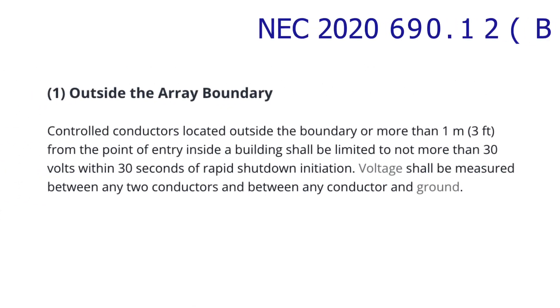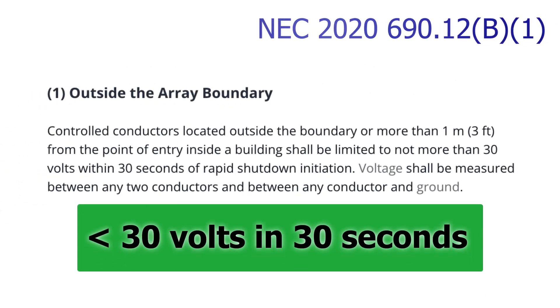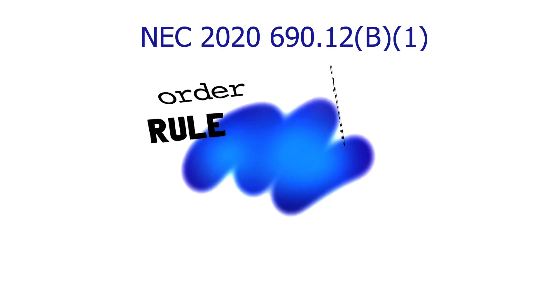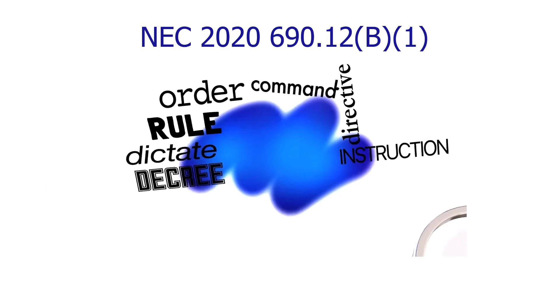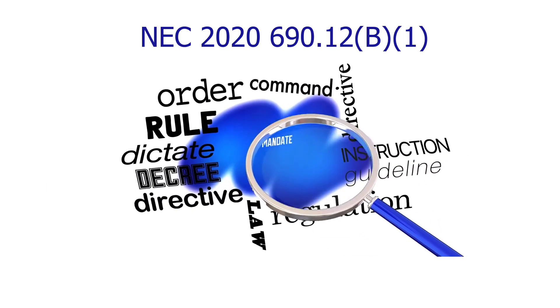Once rapid shutdown is initiated, the outside boundary conductors must fall below 30 volts in 30 seconds. This is mandatory, with no flexibility for interpretation.